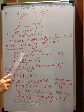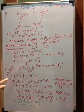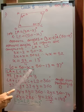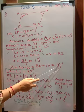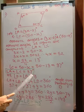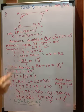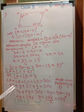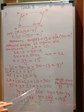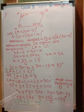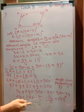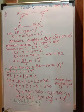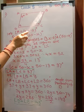Substituting X equals 13 into 50 minus X gives angle C equals 50 minus 13 equals 37 degrees. Since angle A equals angle C, both are 37 degrees. Let angles B and D both equal Y. Using the angle sum property of a quadrilateral: 37 plus Y plus 37 plus Y equals 360, so 74 plus 2Y equals 360, giving 2Y equals 286, and Y equals 143 degrees. So the four angles are 37°, 143°, 37°, 143°.